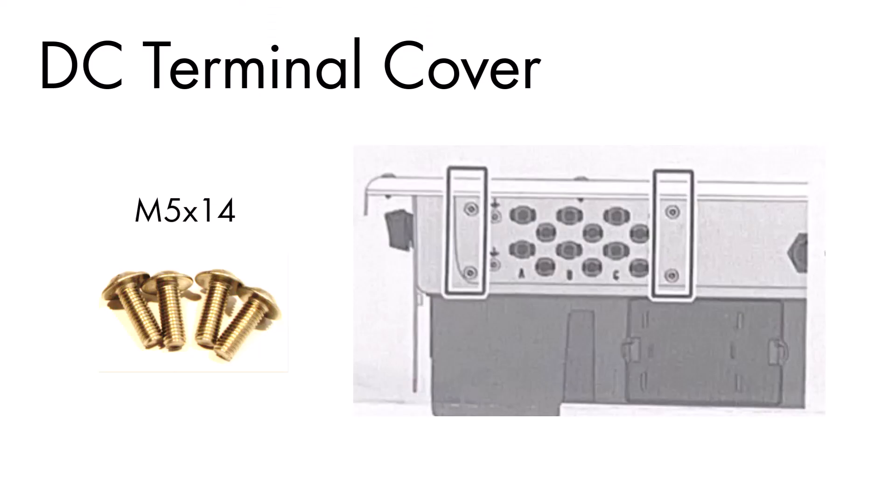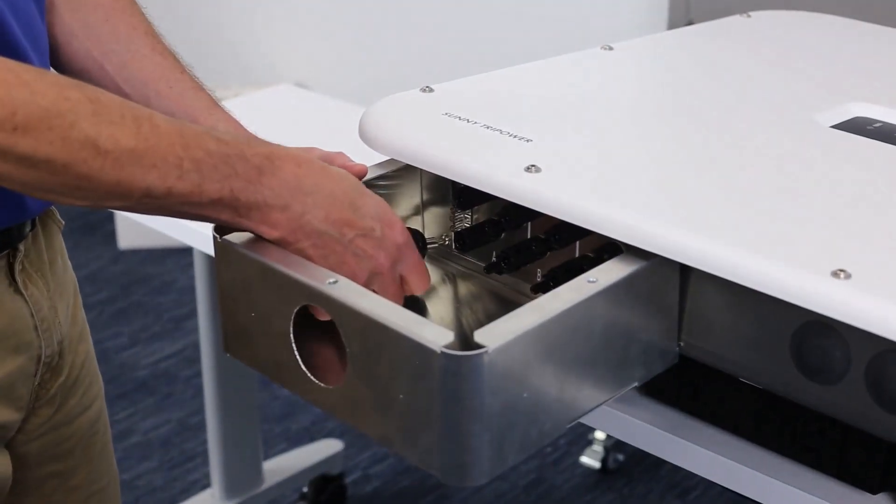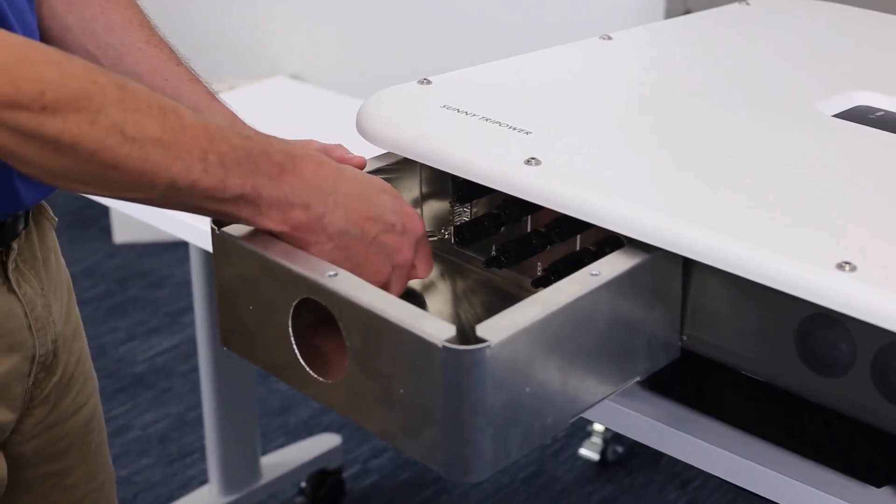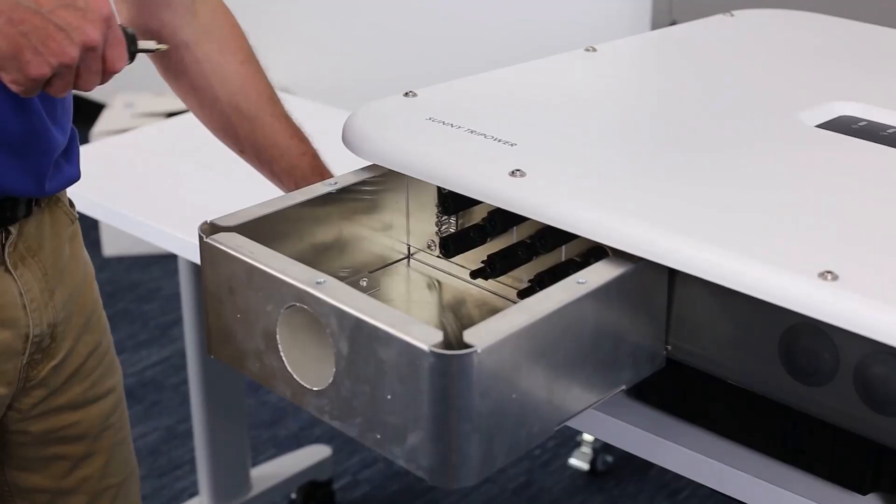The four M5 x 14 screws are used to attach the DC terminal cover to the body of the inverter, while the three M6 x 20 screws are used to secure the lid. With a Torx spec of 35 inch pounds, attach the DC terminal cover securely using the four M5 x 14 screws.